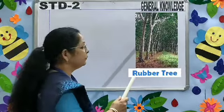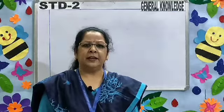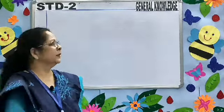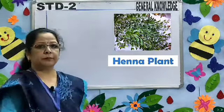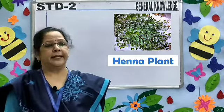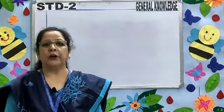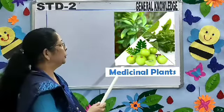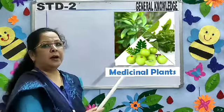Rubber tree — a milky fluid comes out of the rubber tree called latex, and many objects are made out of it. Henna plant gives us a reddish brown dye used for hair. Amla, Tulsi, and Pudina are medicinal plants.